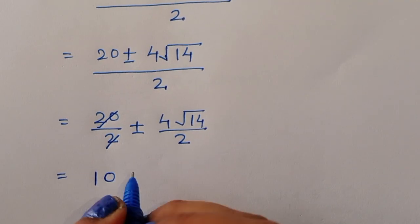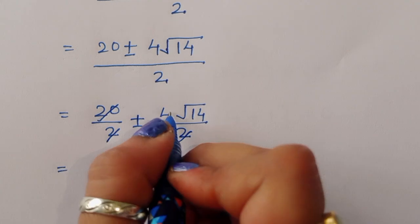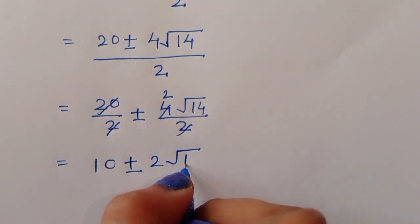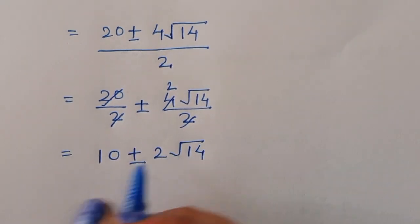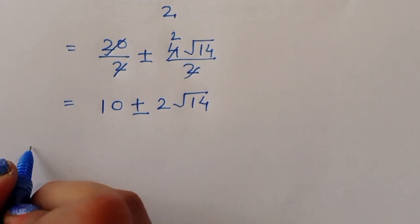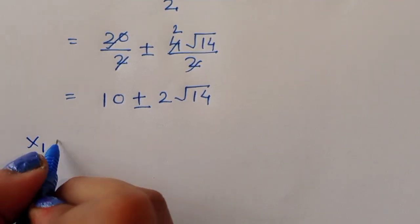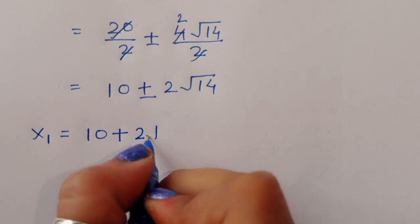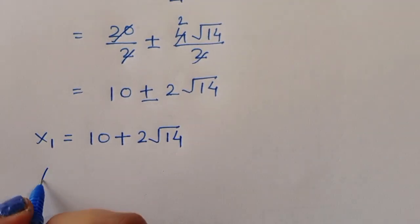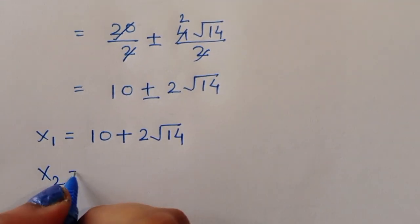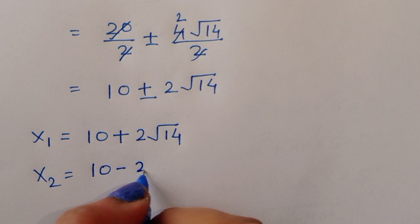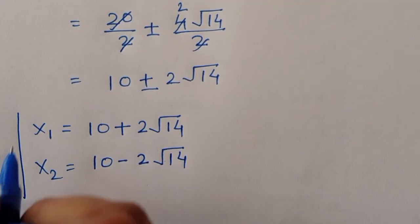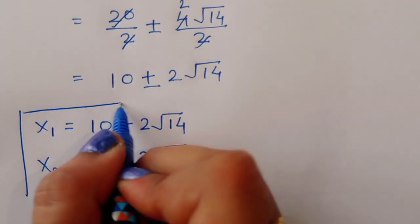Dividing through by 2: 20 divided by 2 is 10, and 4 divided by 2 is 2. So x equals 10 plus or minus 2 root 14. This gives two values: x₁ equals 10 plus 2 root 14, and x₂ equals 10 minus 2 root 14.